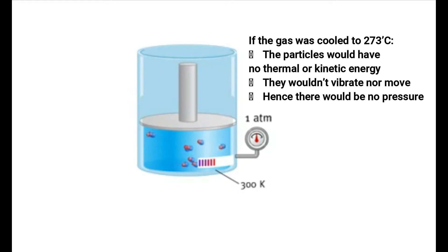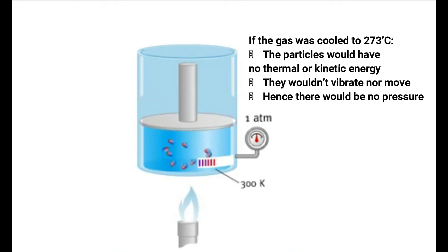This is because when we cool gases, the kinetic energy of the particles decreases. The lower the temperature, the less kinetic energy the particles have, hence they move more slowly. At absolute zero, the particles have no thermal or kinetic energy, so they cannot exert pressure.